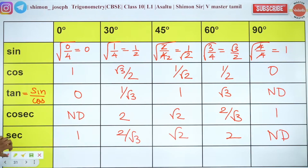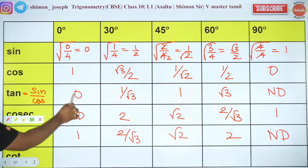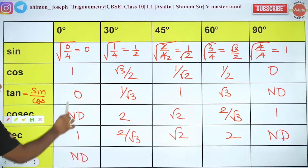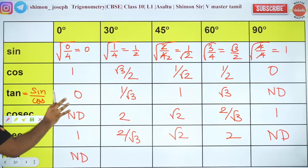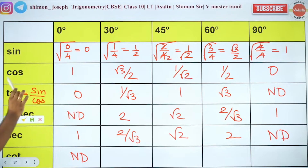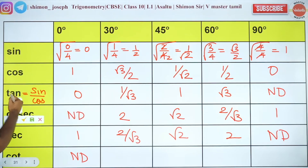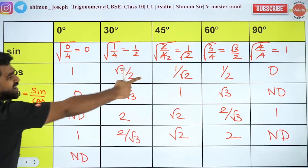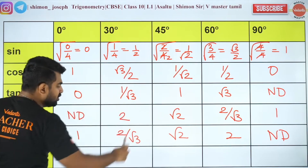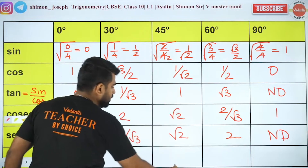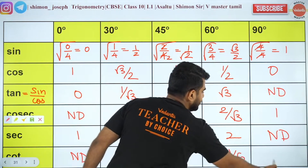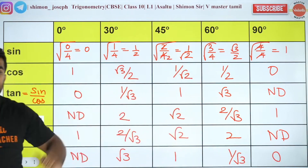Let me tell you one last thing — cot is the reciprocal of tan. Remember: in maths, zero in the denominator is not allowed — not defined. So cot 0 is not defined. Cot values going the other way: √3, then 1, then 1/√3, then 0. That's it — those are the cot numbers.